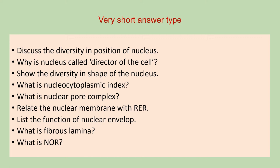The first category of questions are short answer questions which you have to answer in two to three lines. These questions will cover the first compulsory question of your paper. The first question of this category is: discuss the diversity in position of nucleus.